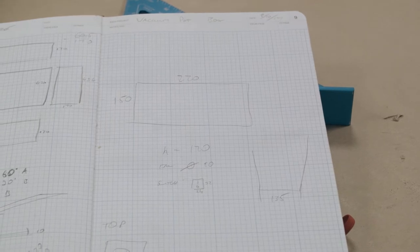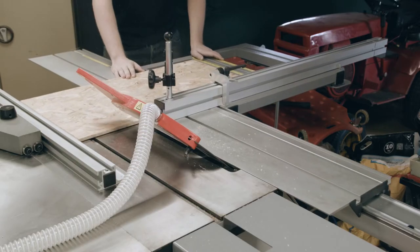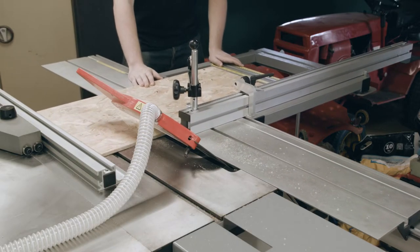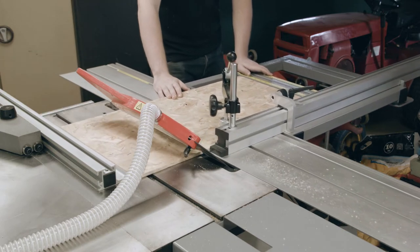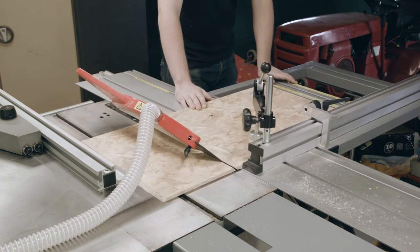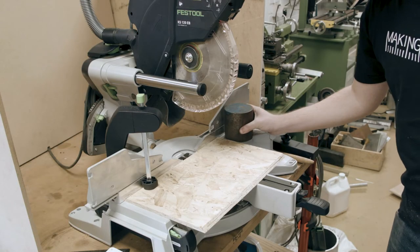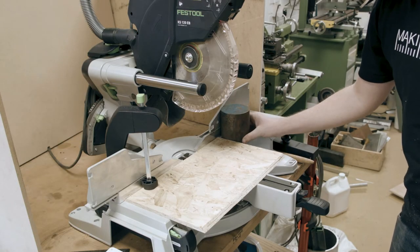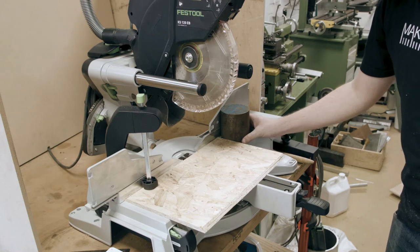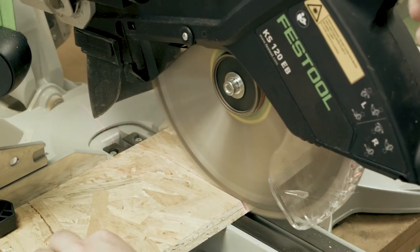After laying out the size of the box I wanted to make I had to make some cuts and I did this on my panel saw. You can see I'm using the blade at an angle here so that I can get mitered corners in the box and after cutting them it's over to the miter saw to finish off the job.